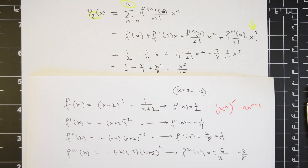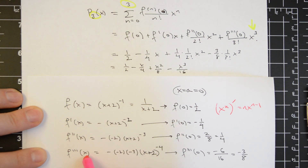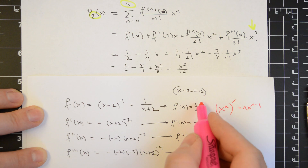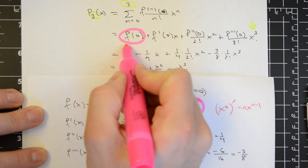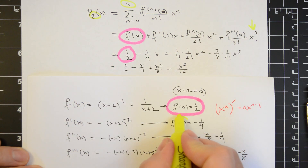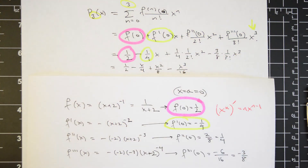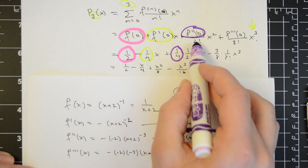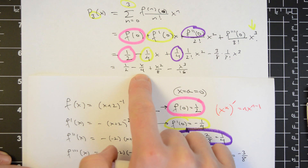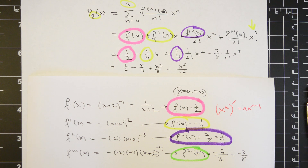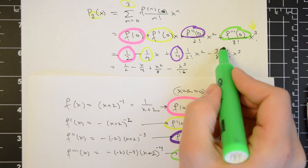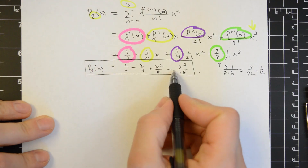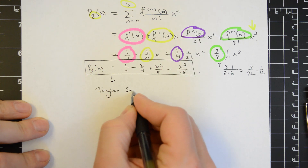One should observe that what we're doing is taking the derivatives in a derivative table. When finding Taylor series, we would want to extend this knowledge to a pattern. We evaluate each of our derivatives at the center point of the expansion and make a substitution into the formula for our Taylor polynomial. f of 0 replaces this term and becomes 1 half. f prime of 0 replaces this term and becomes minus 1 fourth times x. f double prime of 0 is 1 fourth, giving 1 fourth times 1 over 2 factorial, which simplifies to 1 over 8. The last term, f triple prime at 0, is minus 3 eighths times 1 over 6.